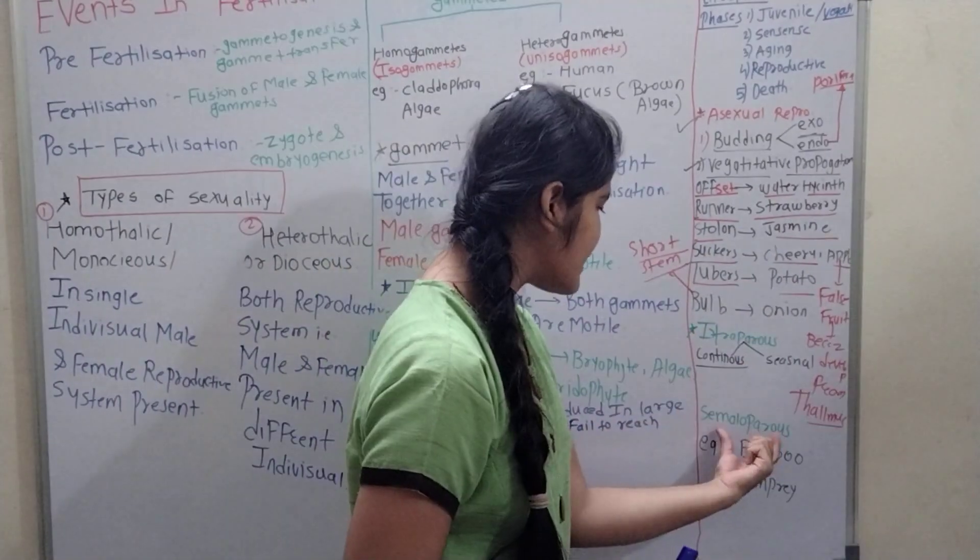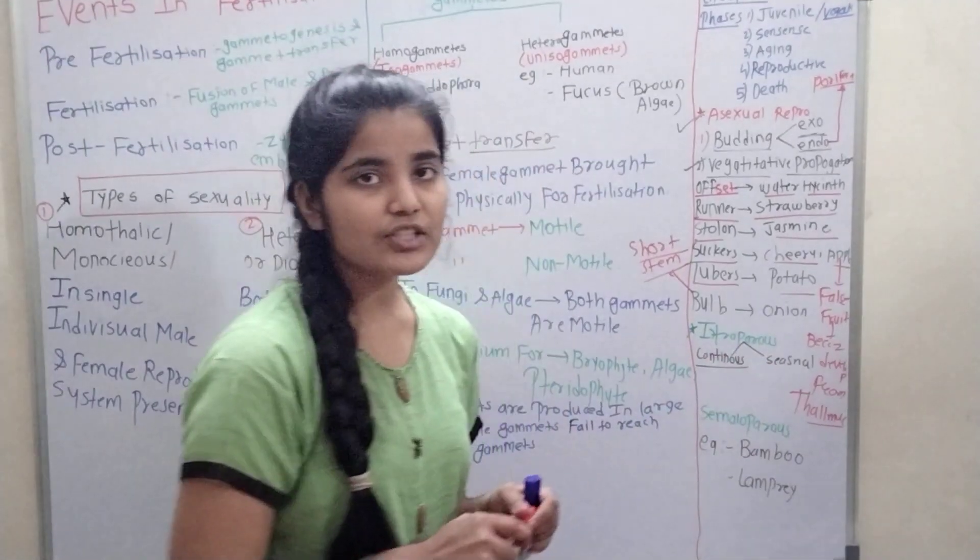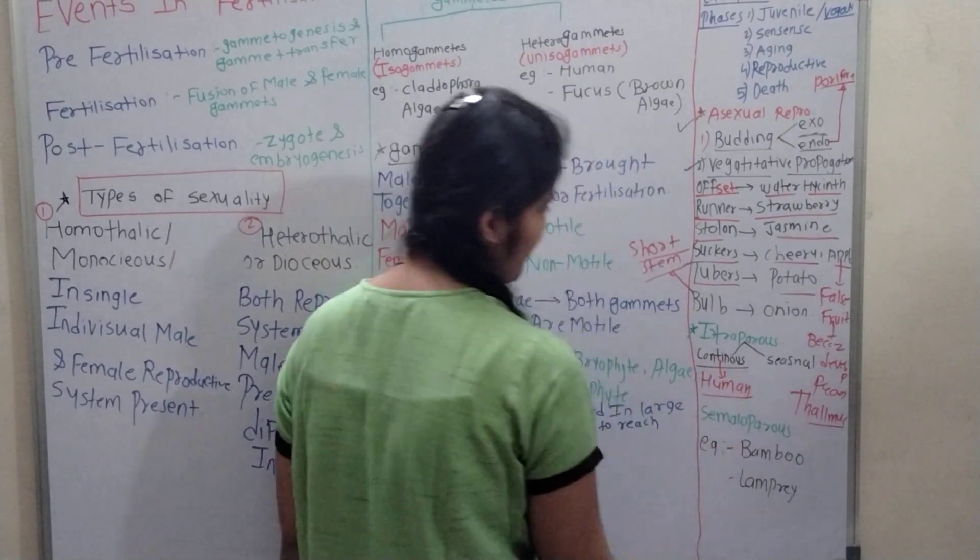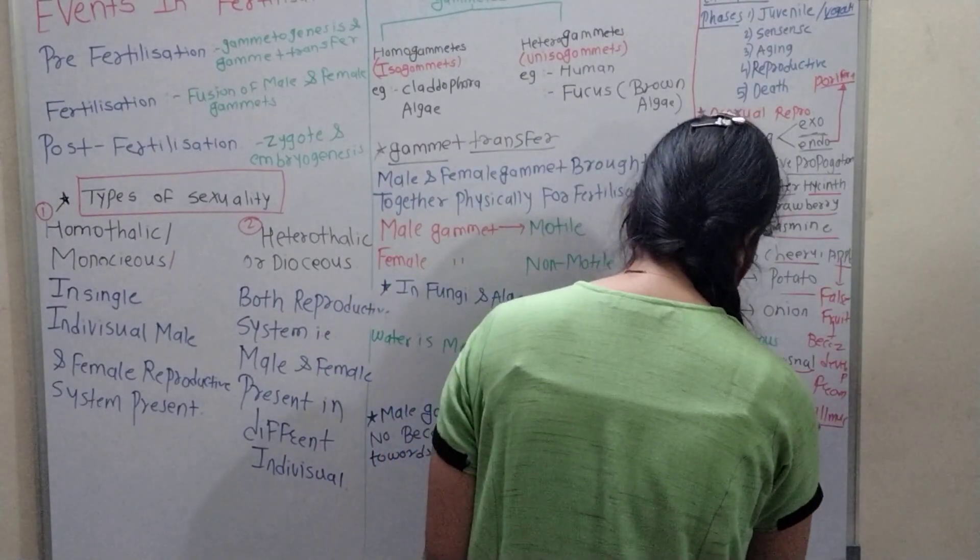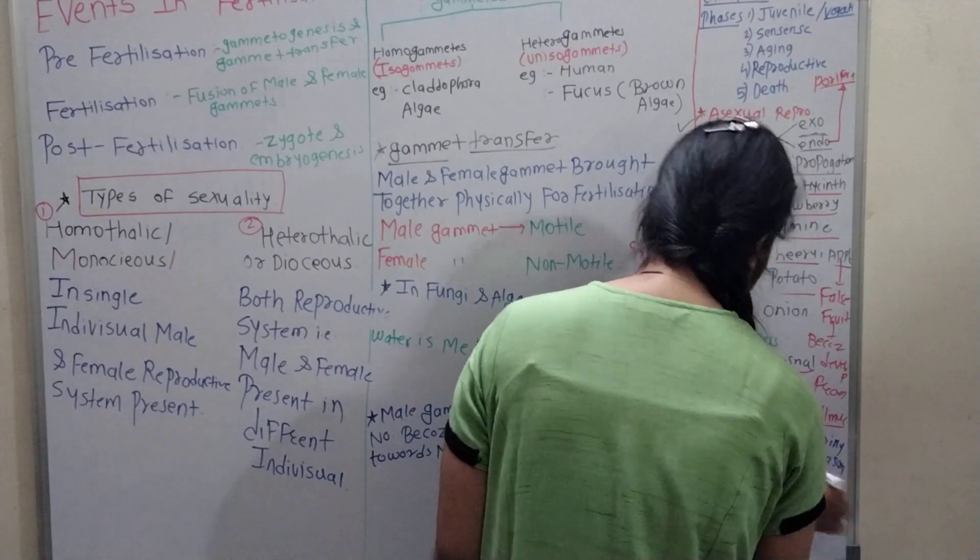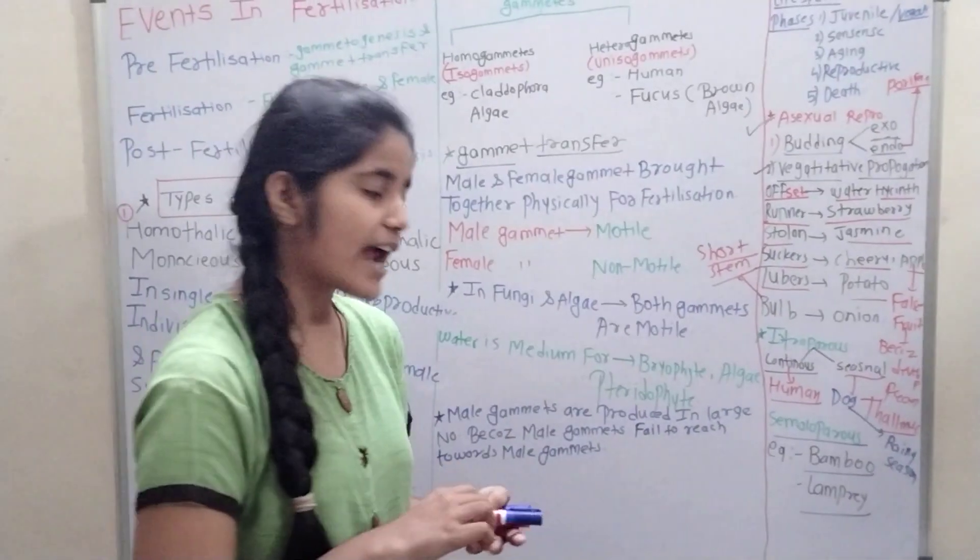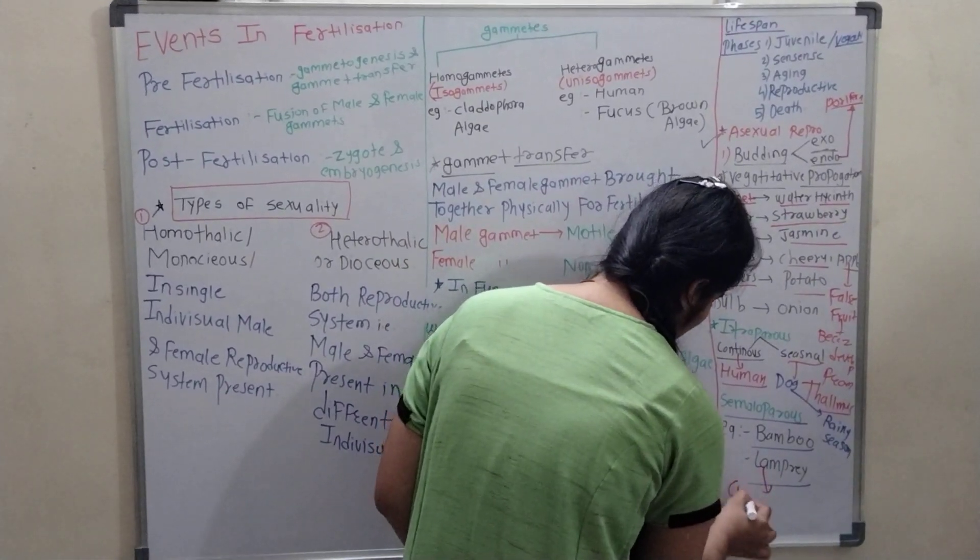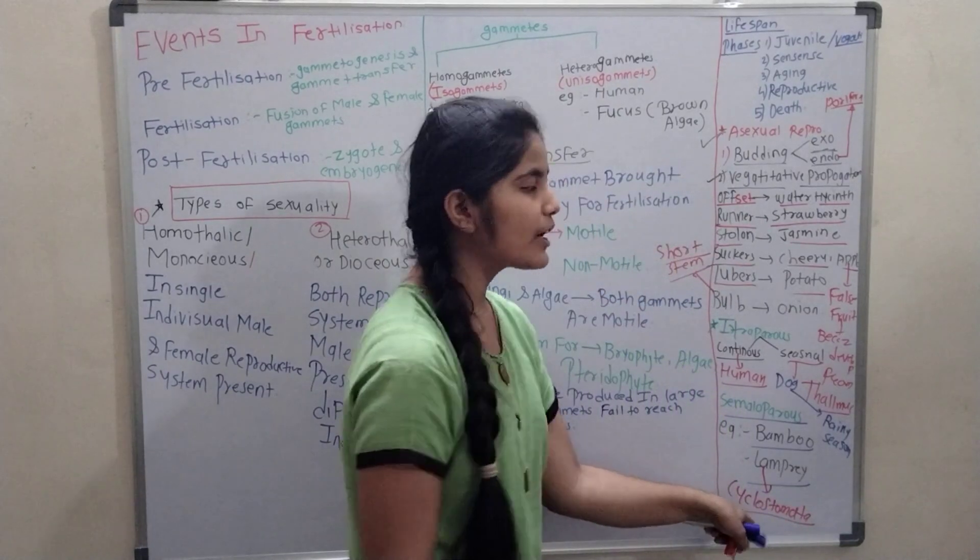Then we see some terms: iteroparous and semelparous. Iteroparous means there are two types: continuous and seasonal. In continuous breeder, human is a good example. In seasonal breeder, there is dog in rainy season. And semelparous means bamboo and lamprey. Bamboo flowers 50 to 100 years. And after flowering, it becomes die. And lamprey is an example of Cyclostomata. In that also, after spawning, it becomes die.